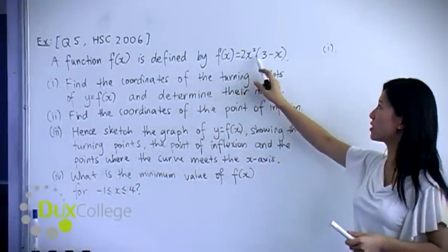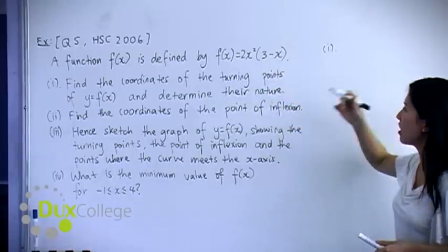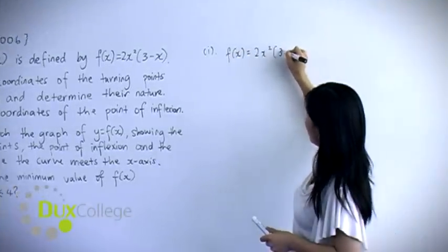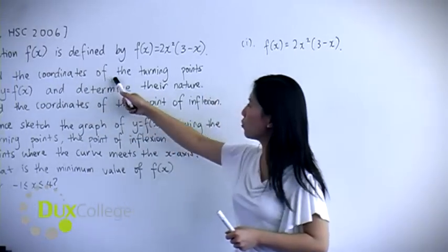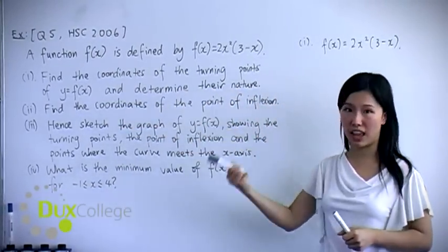So f(x) = 2x² times (3 - x). The first thing that we want to do is find the coordinates of turning points of y = f(x) and determine the nature.